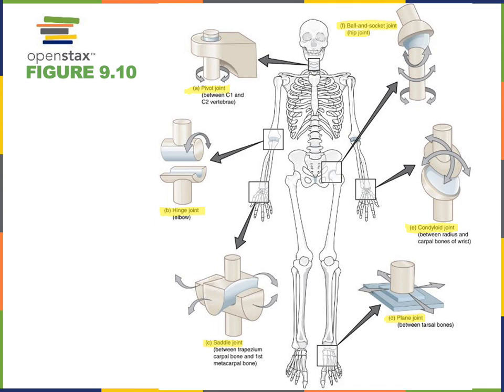Ball-and-socket joints enable rotation as well as flexion, extension, abduction, and adduction — a wide range of motions. This full range of motion is possible at both the acetabulo-femoral joint, commonly known as the hip, and the glenohumeral joint, commonly known as the shoulder.